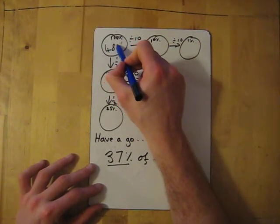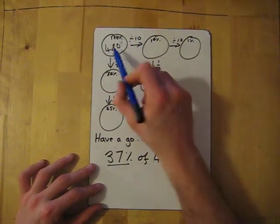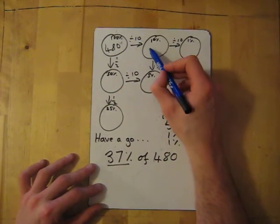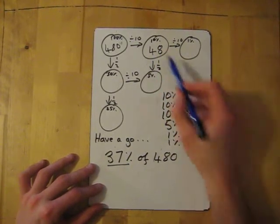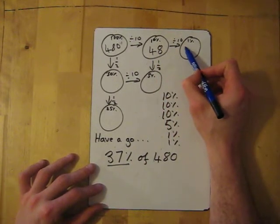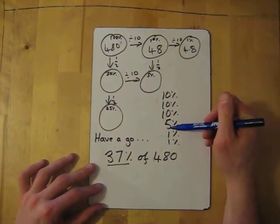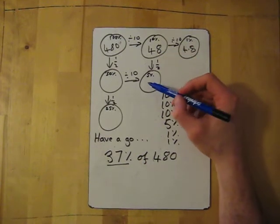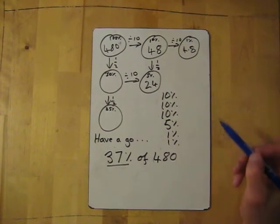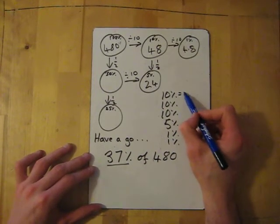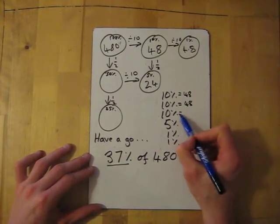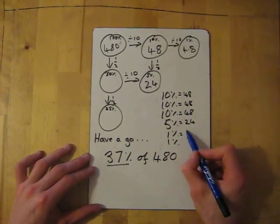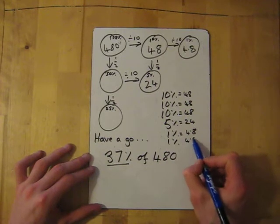So 480 is in there. Now go across because I need the 10%, so divide by 10—it's 48. I do need the 1%, so I'm going across again, divide by 10 again which is 4.8. I also need the 5%, so I'm going down from the 10% and half it: 24. So it's 48, 48, and 48 for 30%, the 5% is 24, and then the 1% is 4.8.